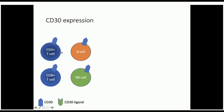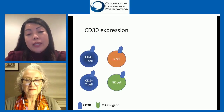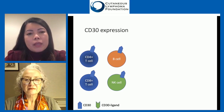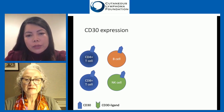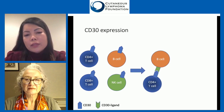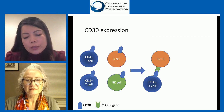We also have B cells and NK cells as part of the immune system. The job of your immune system is to distinguish and eliminate foreign entities like bacteria and viruses. CD30 is a cell surface protein expressed on the surface of these cells, typically when they're activated. When CD30 binds its ligand, CD30 ligand, this is present on B cells, T cells, eosinophils, and macrophages.